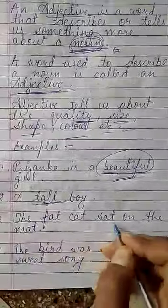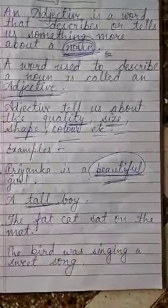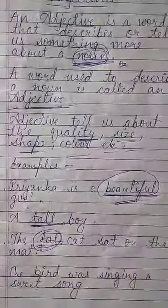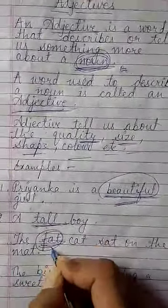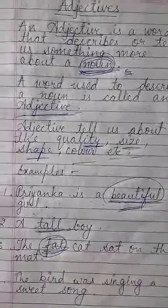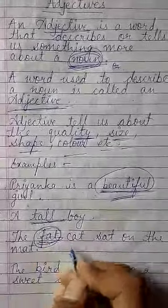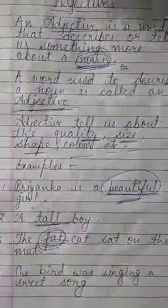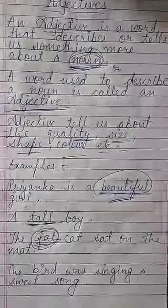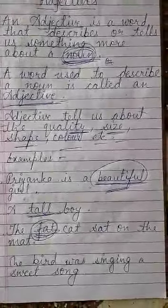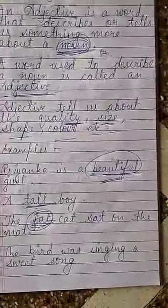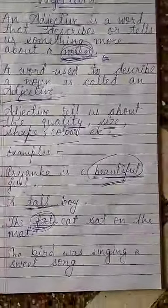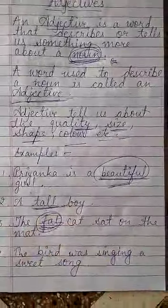The fat cat sat on the mat. Fat cat — cat kaisi hai? Fat. Toh yeh us cat ki quality ya size hai, uska shape hai. Cat kaisi hai? Fat hai. Which points out the kind of cat — which kind of cat sat on the mat? Fat cat.